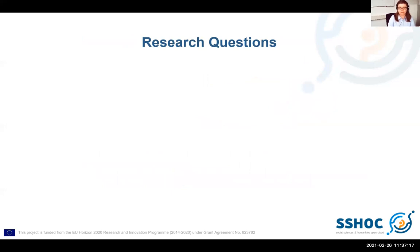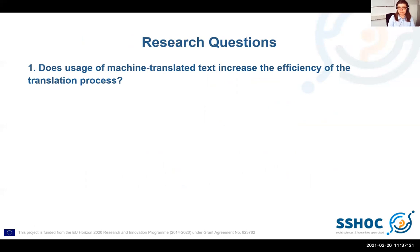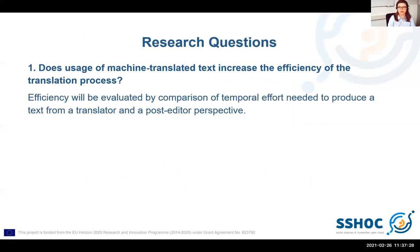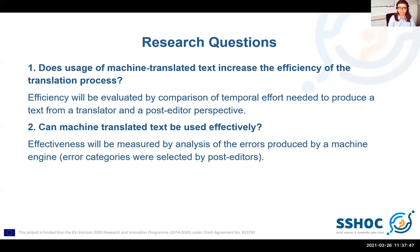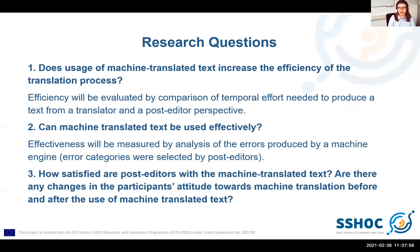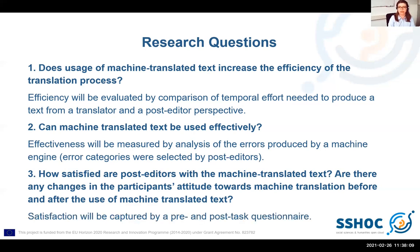My research questions are the following. Does the usage of machine translation text increase the efficiency of the translation process? Efficiency will be evaluated by comparison of temporal effort needed to produce a text from a translator and a post-editor perspective. Can machine translated text be used effectively? Effectiveness will be measured by analysis of the errors produced by a machine engine, and those error categories were selected by post-editors. How satisfied are post-editors with the machine translated text? Are there any changes in participants' attitudes towards machine translation before and after use? Satisfaction will be captured by a pre- and post-task questionnaire.